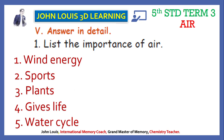Wind energy. Air is used to produce electrical power. We have seen in this chapter that windmills are used to produce electrical energy. The fan in the windmills is rotated by air. Without air the wings of the fan cannot be rotated, and without rotating the wings of the fan electrical energy cannot be produced. Therefore air is used in wind energy.